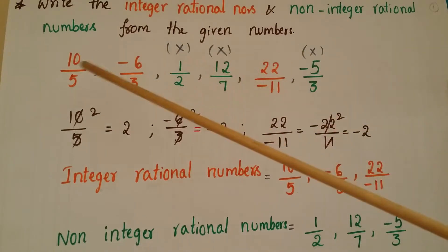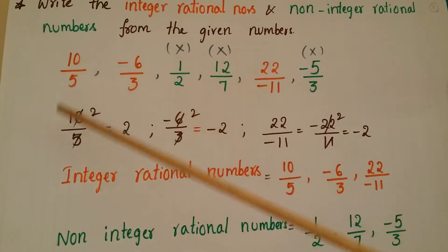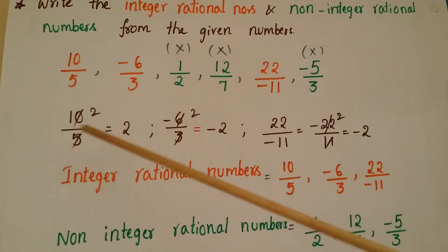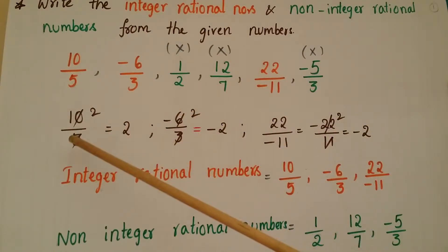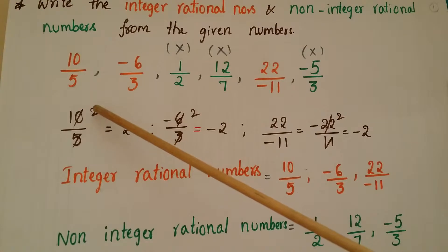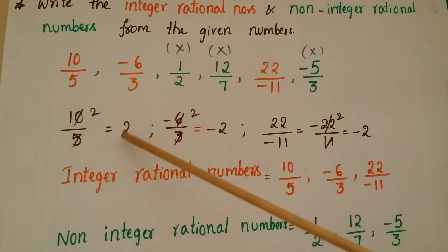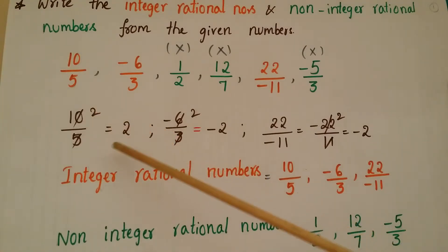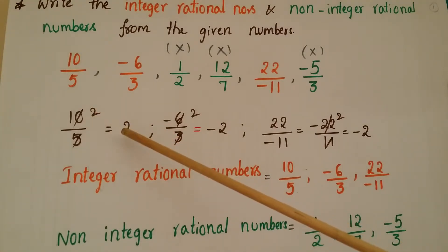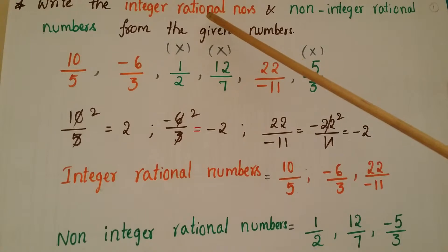If you take the first number 10 by 5, we can write 10 by 5 as 2. So 2 is a positive integer, and this is an integer rational number.